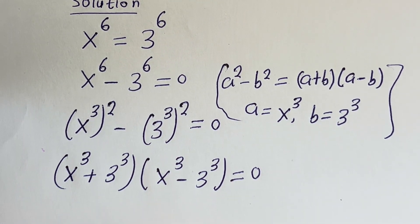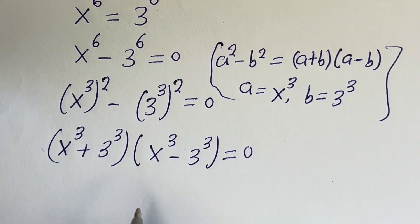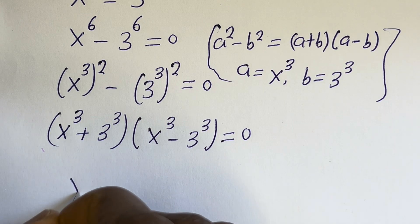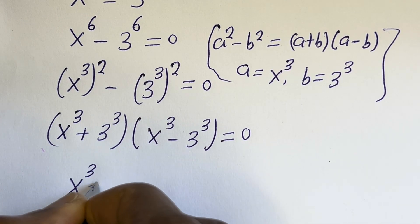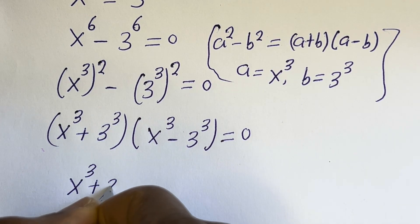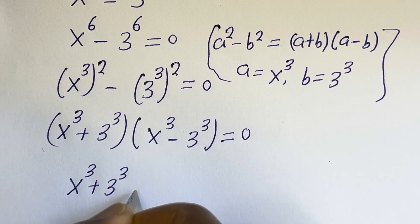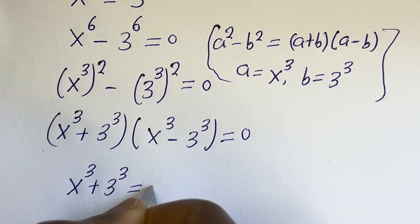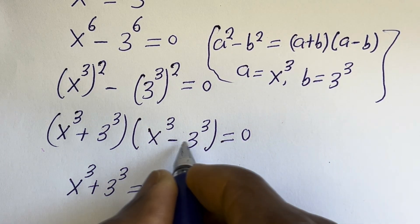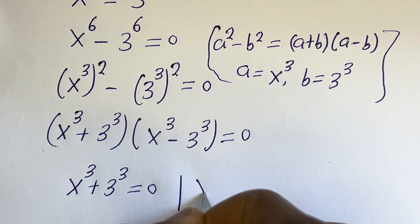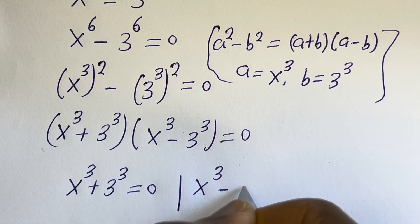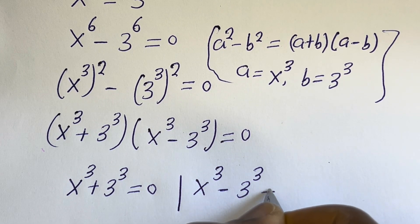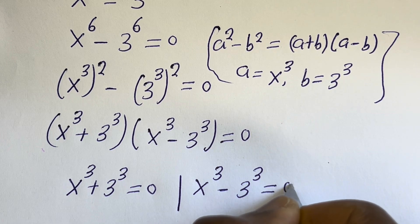There are two cases here. The first case is x to the power of 3 plus 3 to the power of 3 is equal to 0. And the second case is x to the power of 3 minus 3 to the power of 3 is equal to 0.